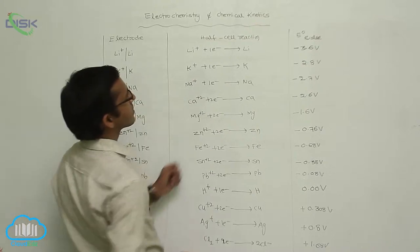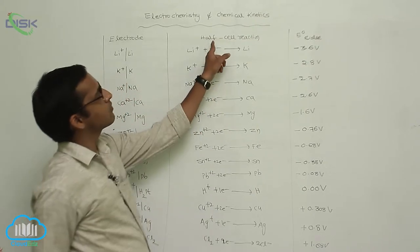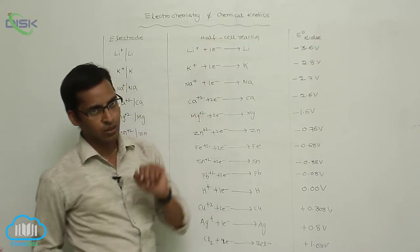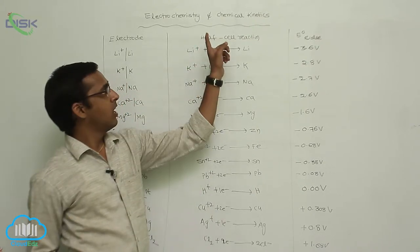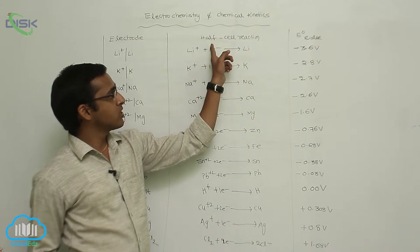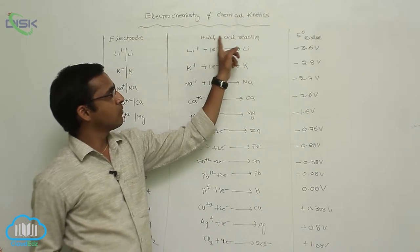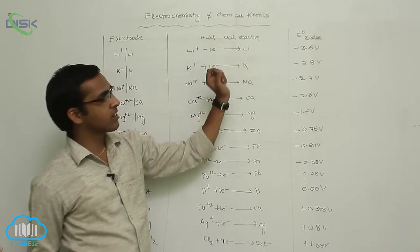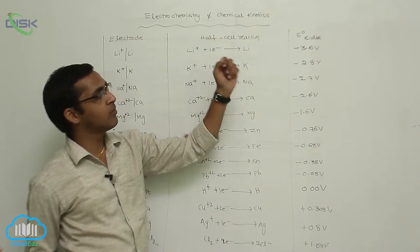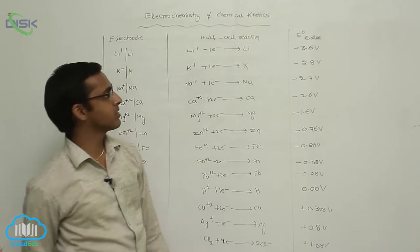In cell reactions, generally cell reactions are two types: one is oxidation — the cell of oxidation reaction — and the cell of reduction reactions.